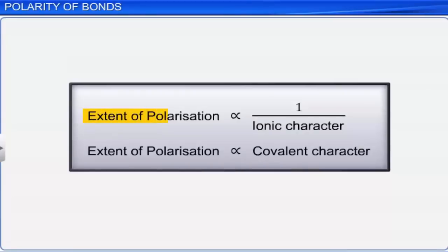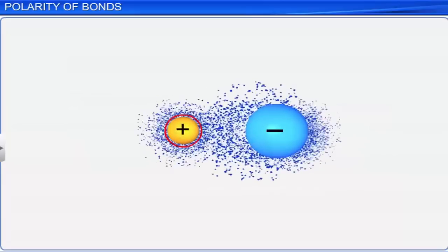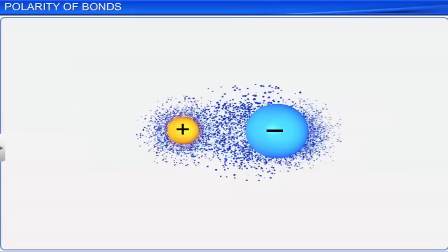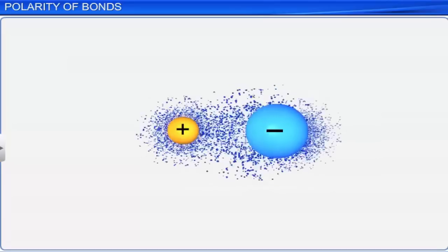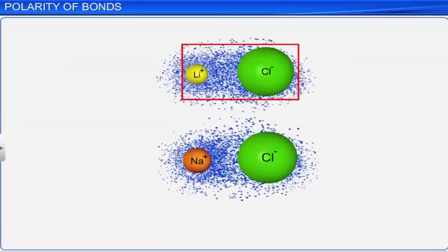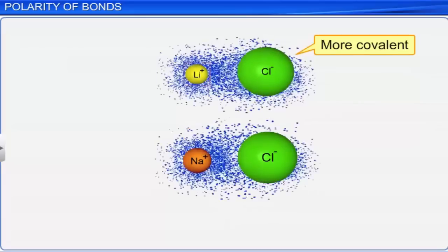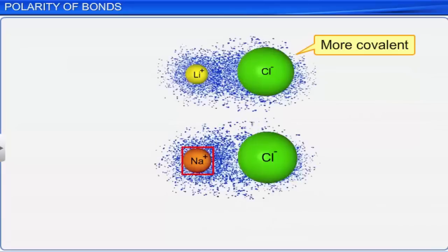If the extent of polarization is small, then the bond is more ionic in nature. If the extent of polarization is more, then the bond is more covalent in nature. The smaller the size of the cation, the greater is the covalent character of an ionic bond. For example, lithium chloride is more covalent than sodium chloride because the size of the lithium cation is less than that of the sodium cation.